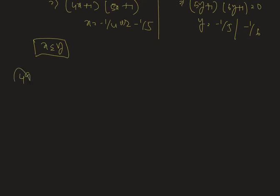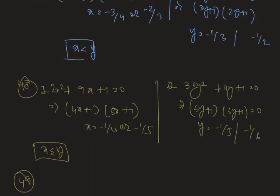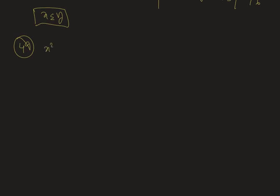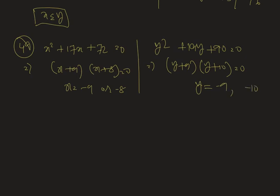Finally, question number 49: we have two quadratic equations. The first is x² + 17x + 72 = 0, which gives (x + 9)(x + 8) = 0, so x = −9 or x = −8. The second equation is y² + 19y + 90 = 0. After factorizing, we get (y + 9)(y + 10) = 0, hence y = −9 or y = −10. Clearly, x is greater than or equal to y here.